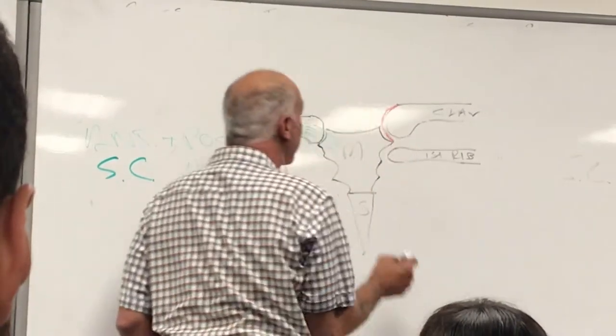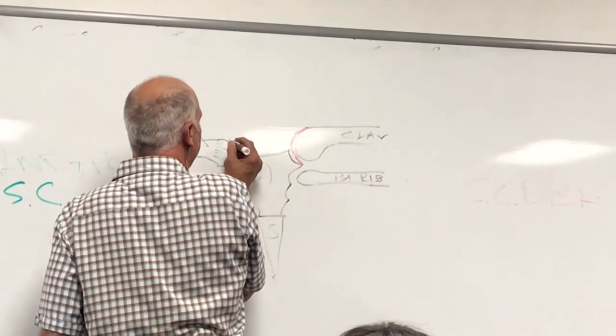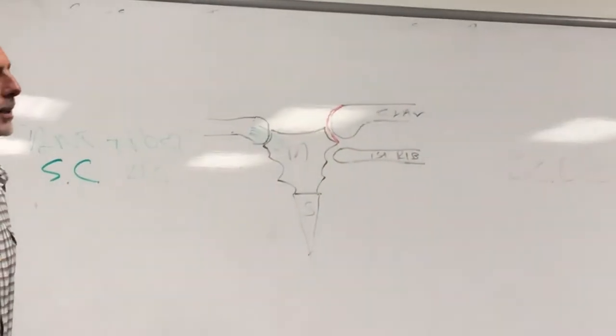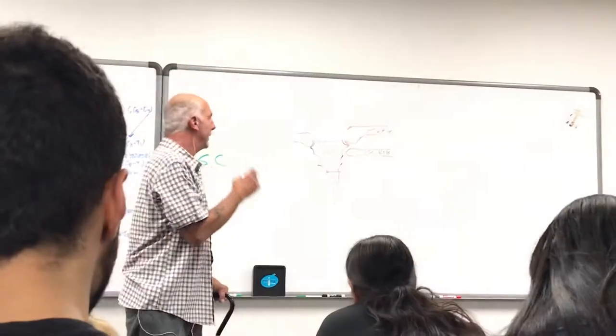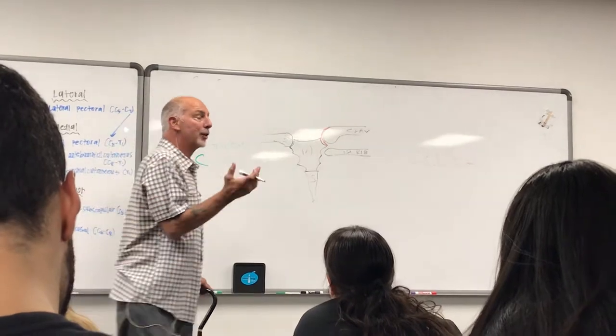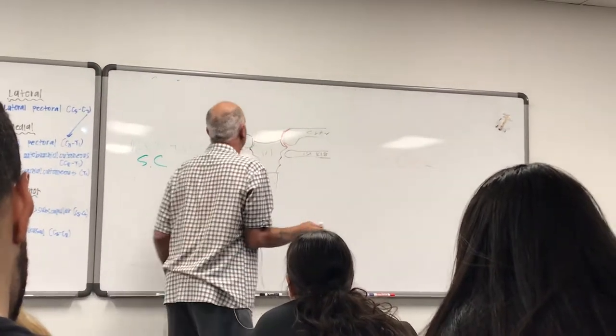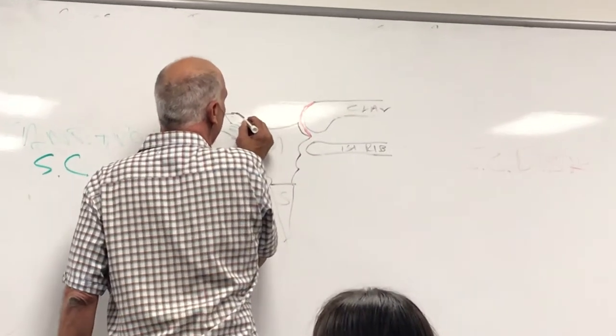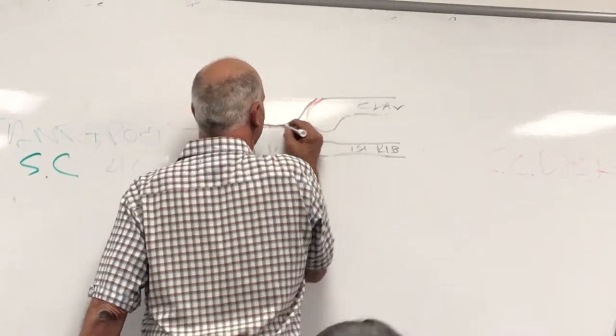Then we have the interclavicular ligament. Remember, this sternoclavicular disc is actually within the joint capsule, right? Think about that. It's within the joint capsule just like the menisci are. So here, then, outside and blending with the joint capsule, we're going to have this interclavicular ligament.